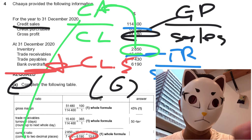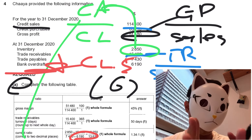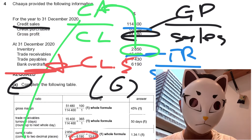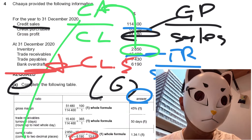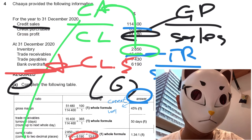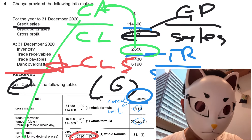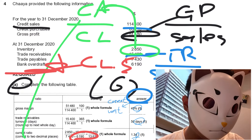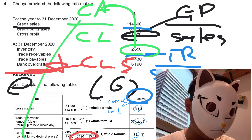Question 4a is quite straightforward, but you must remember the formulas. One important thing: you must give the correct units in your answers, otherwise marks will be deducted. For gross margin it's a percentage, for trade receivable turnover it's days, and for the current ratio it's expressed as a ratio.